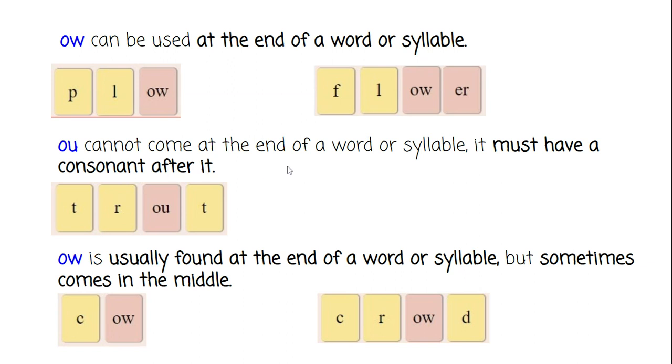O-U cannot come at the end of a word or syllable. It must have a consonant after it. Here we have the word t-r-o-u-t. Trout. And we see the O-U is in the middle. It says here, it cannot come at the end. And then O-W is usually found at the end of a word or syllable, but sometimes comes in the middle. So, that O-W, once again, it can be at the end or sometimes in the middle. And we see two words giving us an example. We have k-ow, cow, and then we have k-r-ow-d, proud. And you can see that O-W at the end and then in the middle.